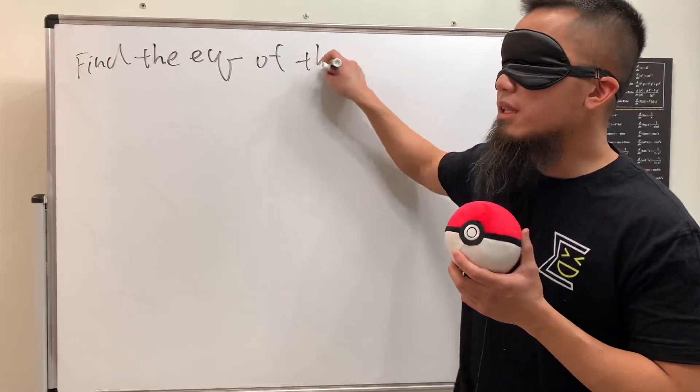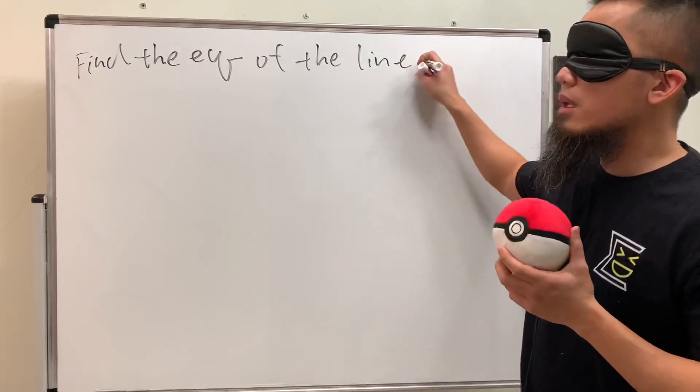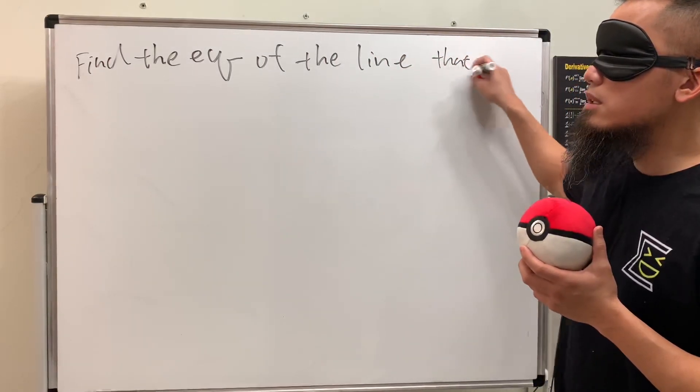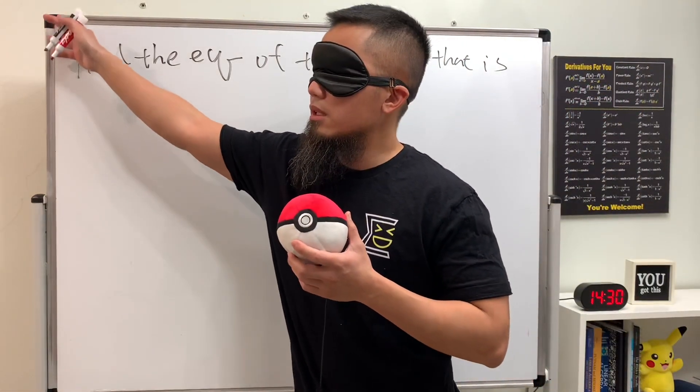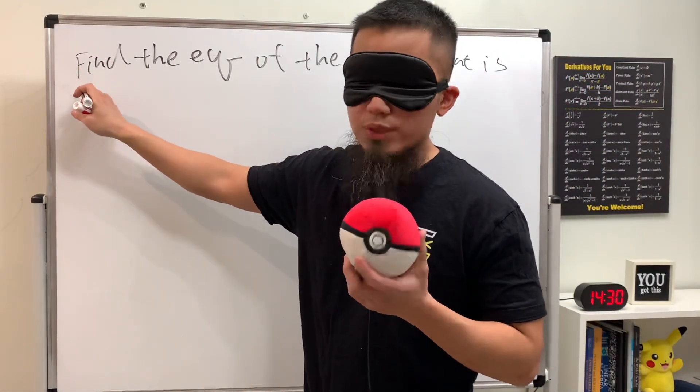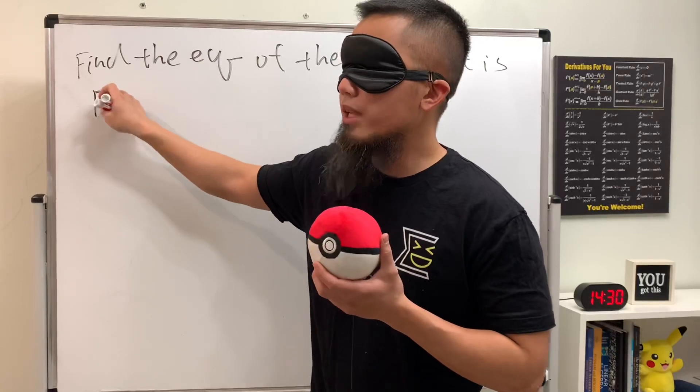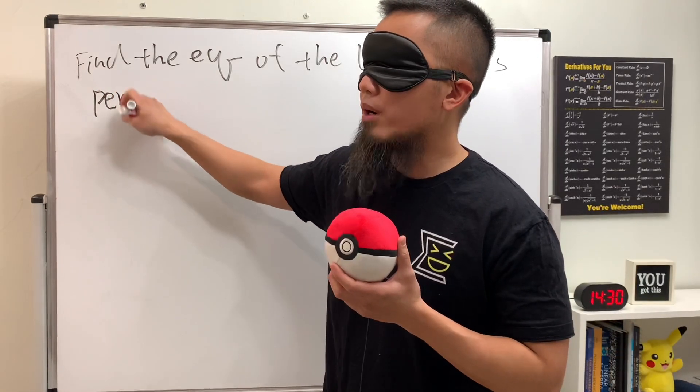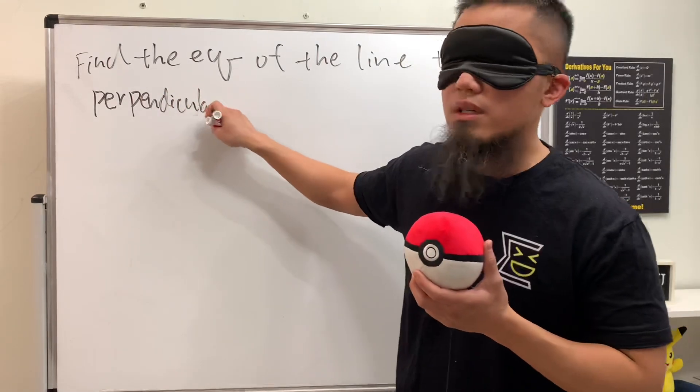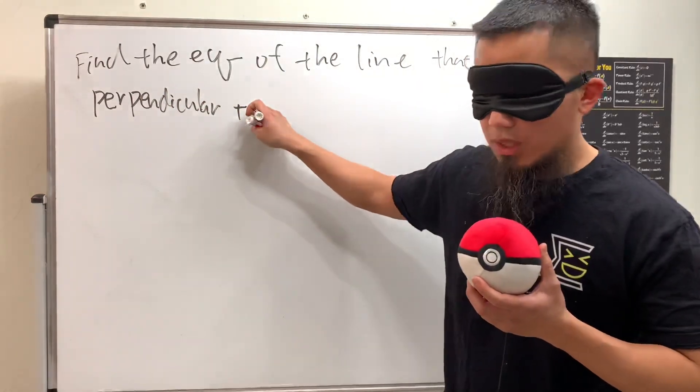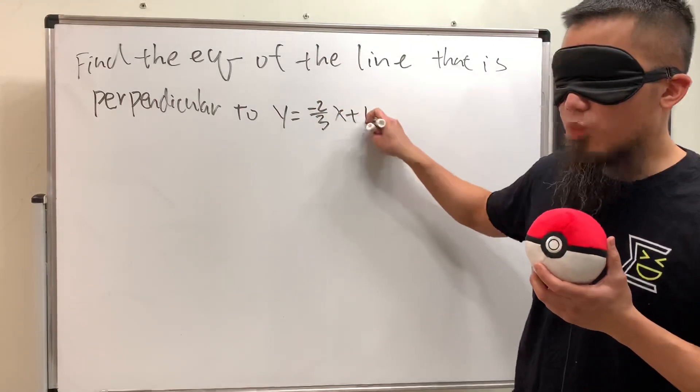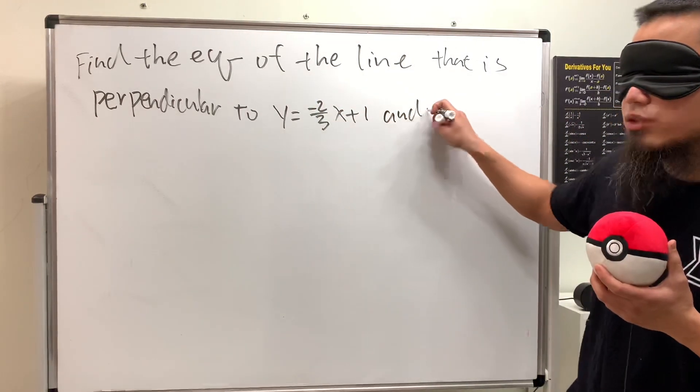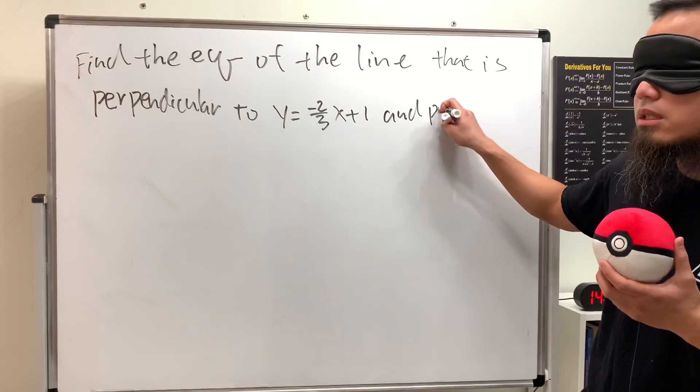Find the equation of the line that is perpendicular to y equals negative two-thirds x plus one, and passing through the point four comma negative seven.